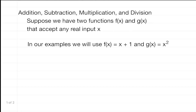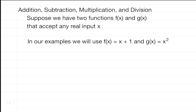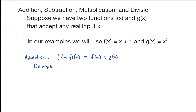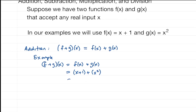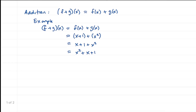Let's look at addition. We have f plus g of x, and this is just f of x plus g of x. In our example, f plus g of x equals f of x plus g of x. Our f of x is x plus 1, and we add our g of x which is x squared. This gives us x plus 1 plus x squared, which we can write as x squared plus x plus 1.